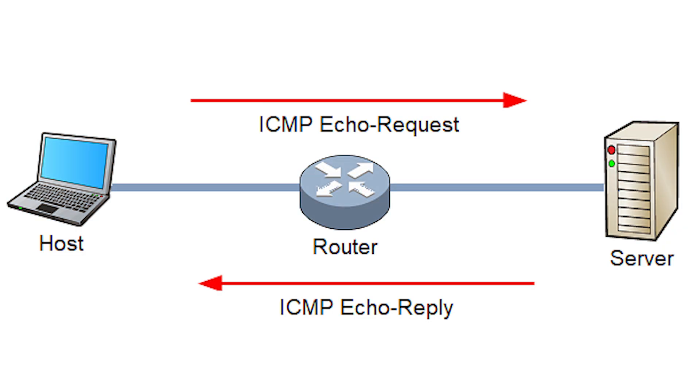A ping check is a very simple way to verify that an endpoint is reachable. It can be used quickly to diagnose network issues and ensure consistent connectivity for critical systems. It works by sending ICMP echo requests to a server, and if the server responds, you know it's available.